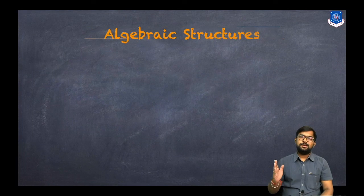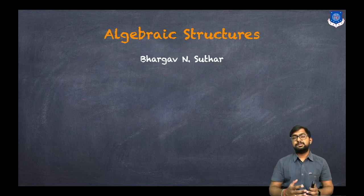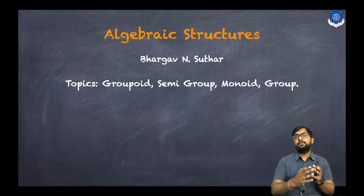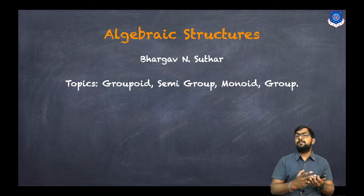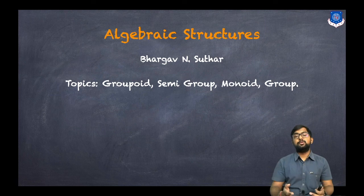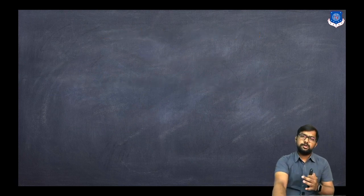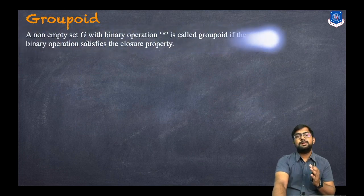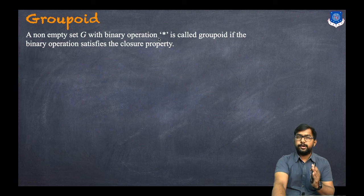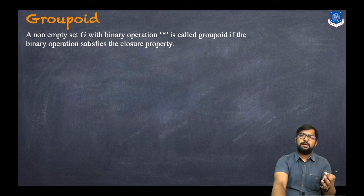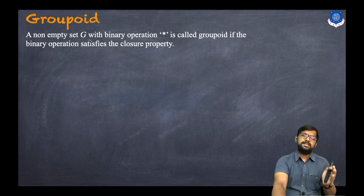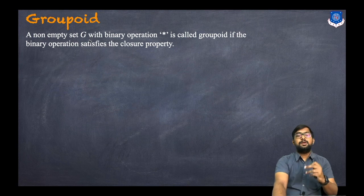Hey everyone, this is Bhargav Sudhar. In today's session we'll discuss algebraic structures — specifically groupoid, semi-group, monoid, group, and abelian group. A set having one or more binary operations is called an algebraic structure. These all are algebraic structures, but each has a specific name depending on which properties the binary operation satisfies.